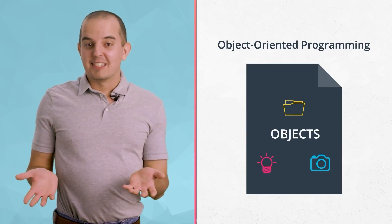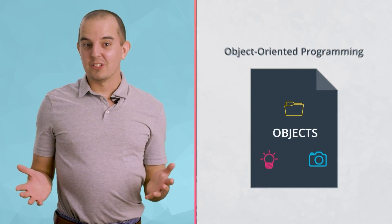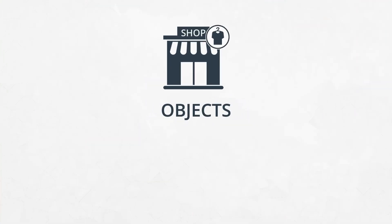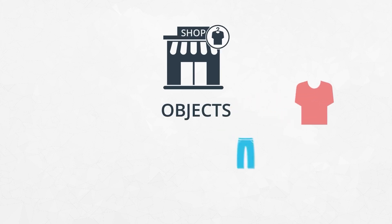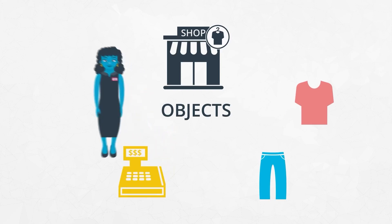You can think about objects as things that exist in the real world. If you were going to build a clothing store, the store itself would be an object. The items in the store, like shirts and jeans, would also be objects. The cash register would be an object, and even a salesperson would be an object.